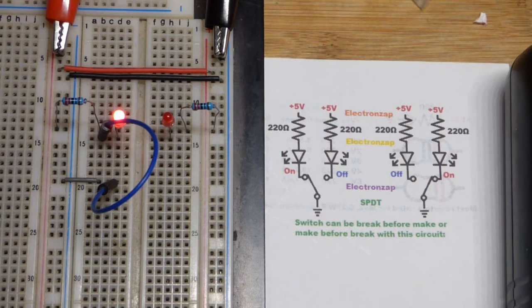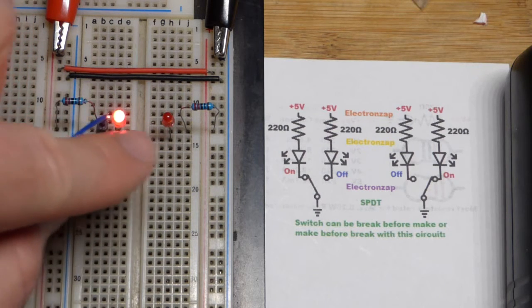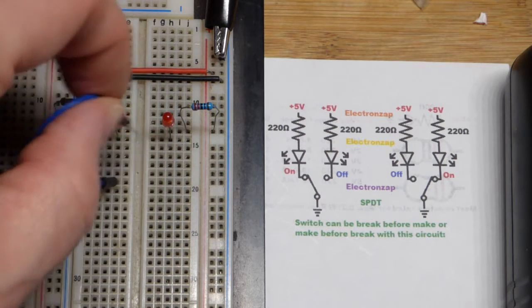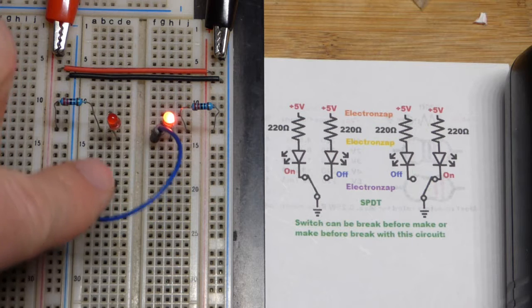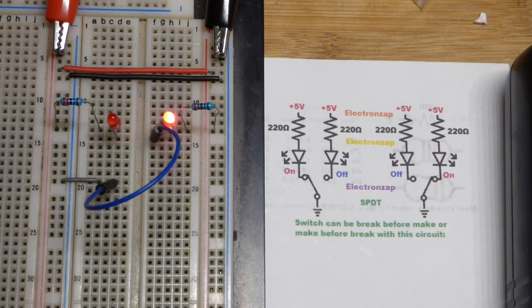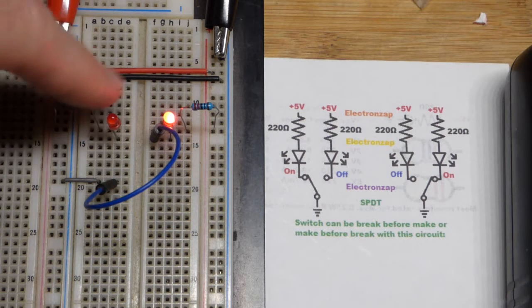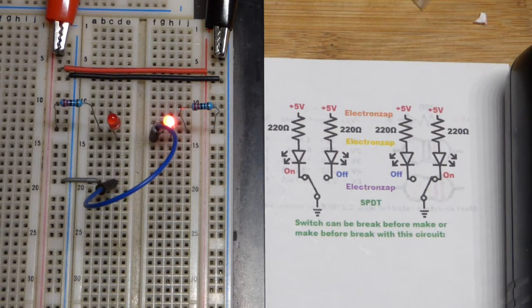Some of the single pole double throw switches will connect the two before it disconnects the one. So when you're switching it they both may be temporarily connected. That's called make before break, so you make another connection before it breaks with the old one.